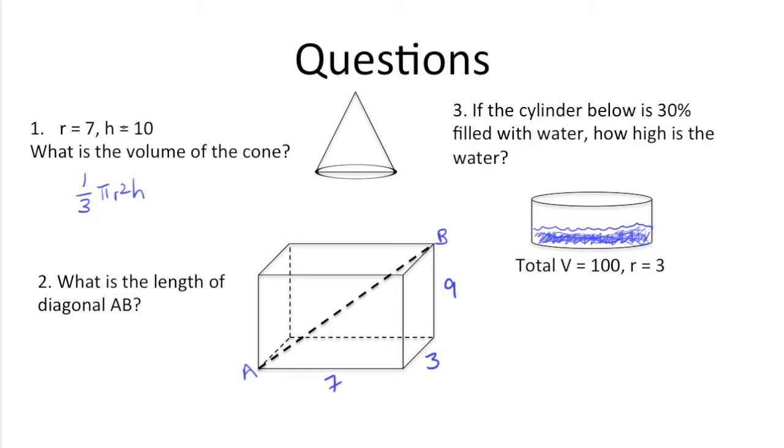We know radius and height, so we just need to plug those values in. So we get one-third pi r squared is 7, which is 49, and we know height is 10.